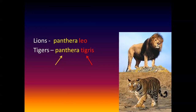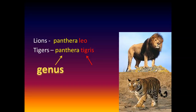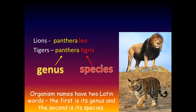All organisms have an international scientific name so they are recognized throughout the whole world, and this usually involves two words. The first word is the genus and the second word is the species, and this is known as the binomial system — 'bi' because it involves two, 'nomial' because it's the naming system — so using two words to name organisms.